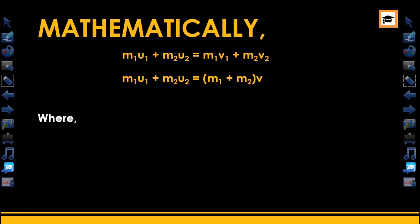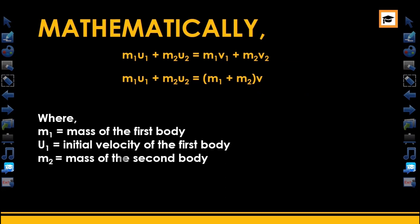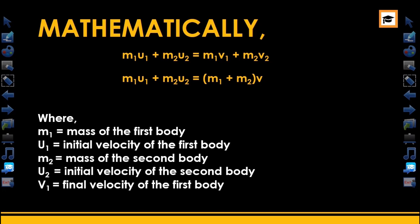Where m1 is the mass of the first body, u1 is the initial velocity of the first body, m2 is the mass of the second body, u2 is the initial velocity of the second body, and v1 and v2 are the final velocities.